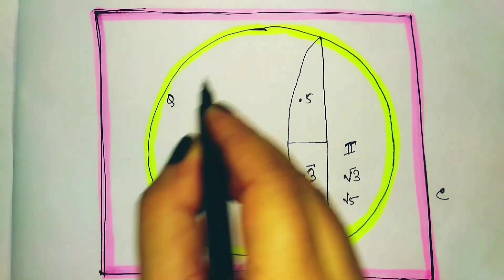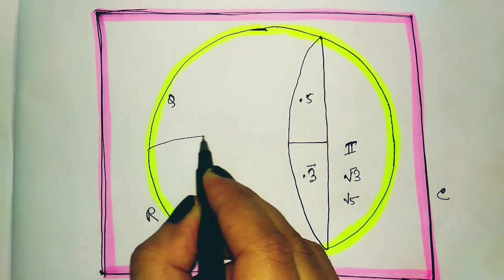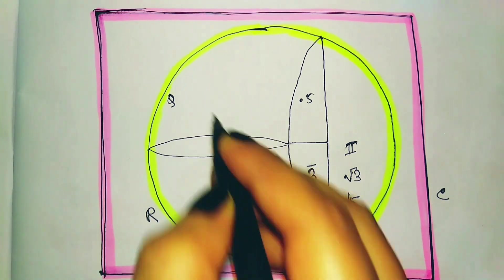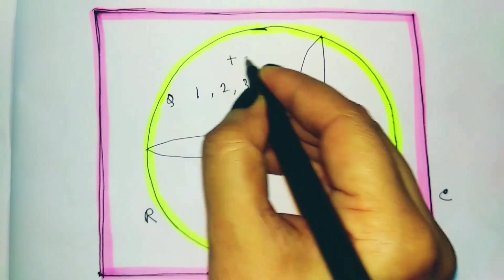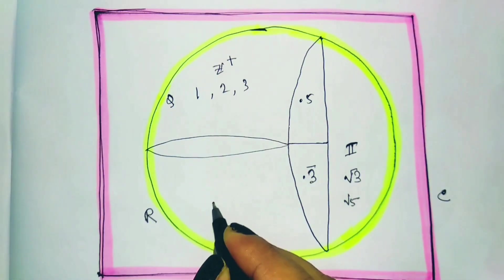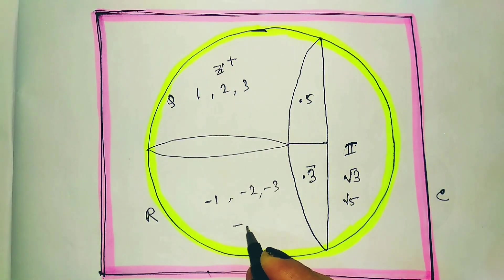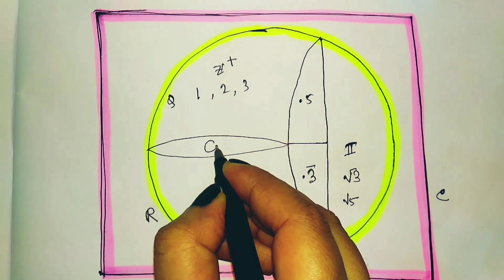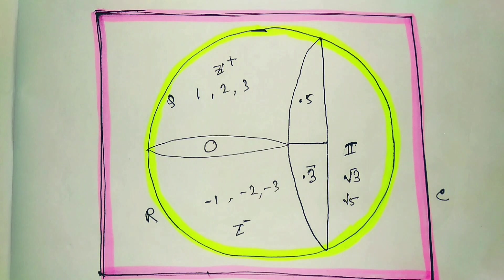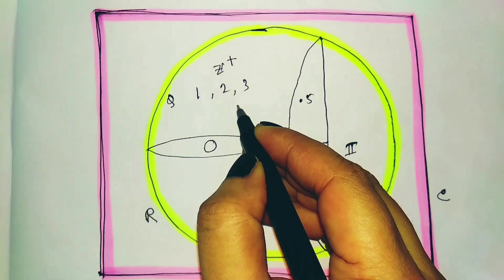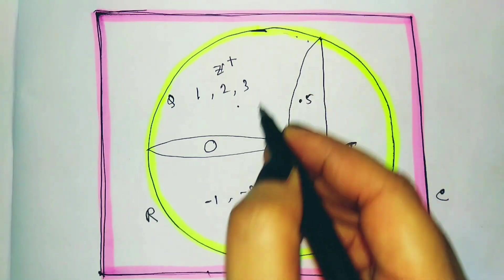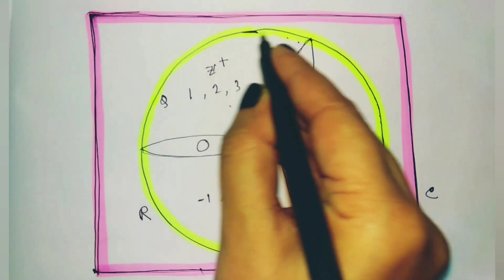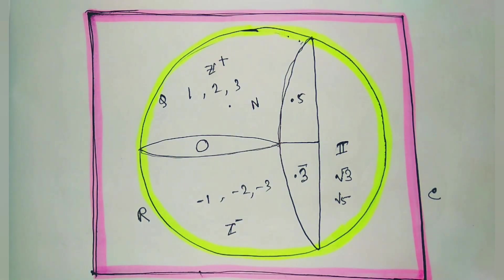Separating the fraction and integer parts: the integer part divides into positive integers (1, 2, 3...), negative integers (−1, −2, −3...), and zero. The positive integers alone form the natural numbers. Including zero gives the whole numbers. This completes the full diagram for the number system.